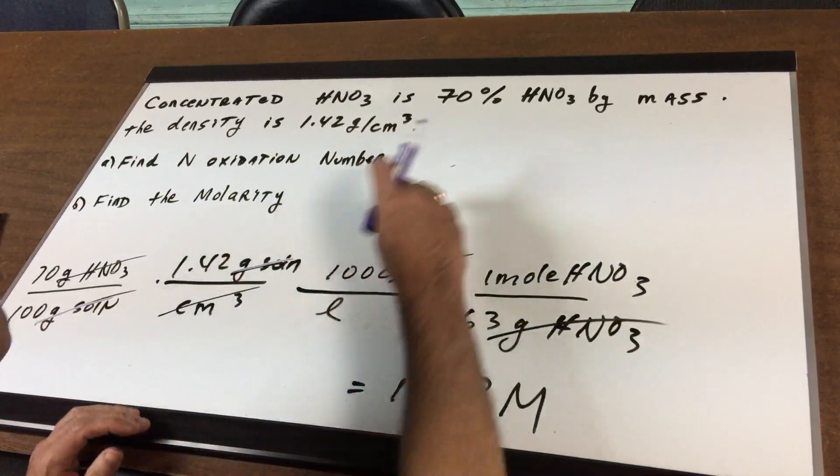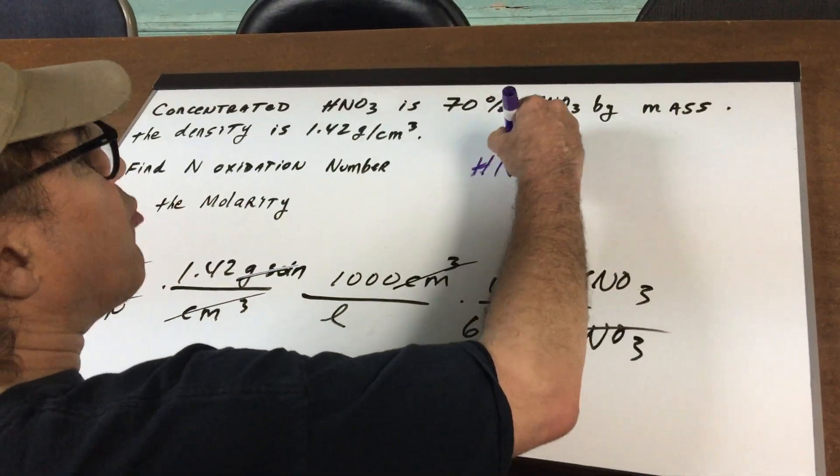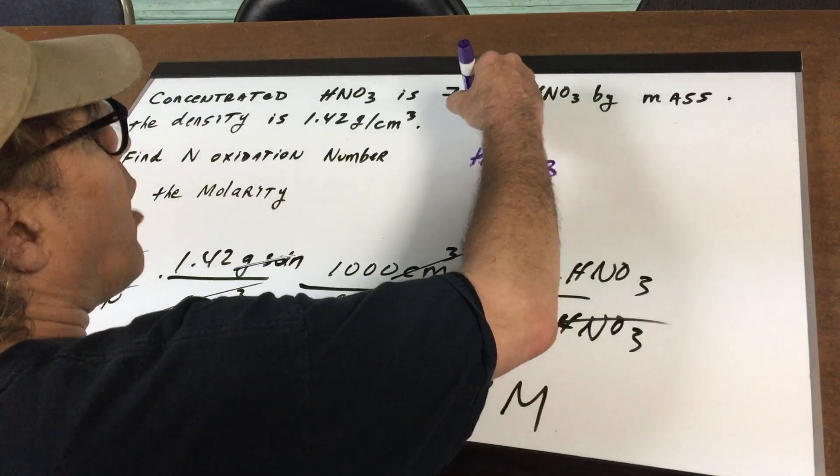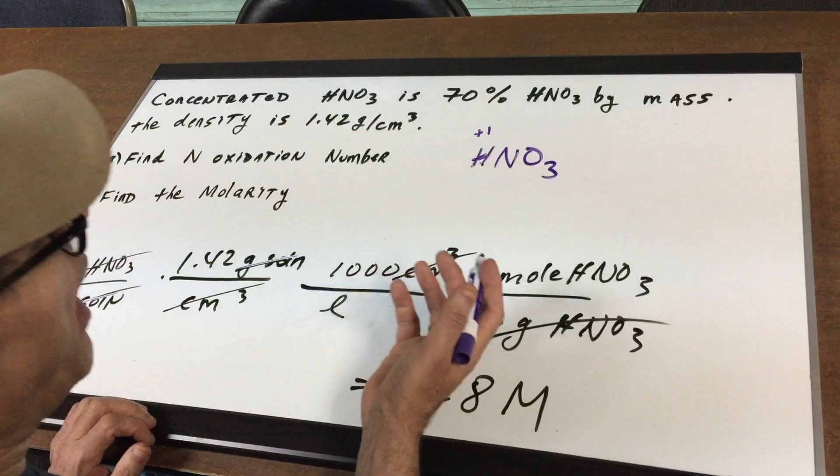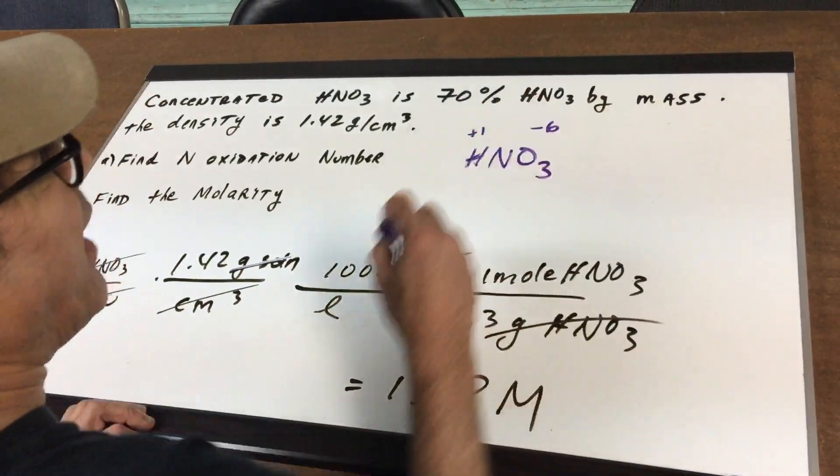To find the oxidation number, we want to make sure that all these numbers balance out to be zero. We know hydrogen is plus one. Oxygen is minus two, and there's three of them. So that gives me a minus six.